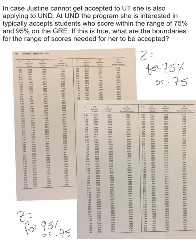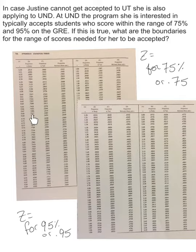For the lower end: 75% converts to 0.75 as a decimal. We look in the B column (the body) of the unit normal table because 75% is greater than 50%. The closest value is 0.7517, which gives a Z score of 0.68.